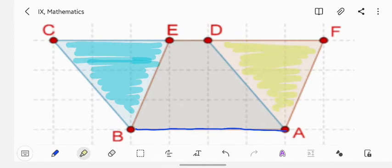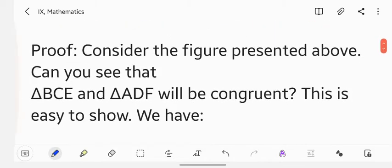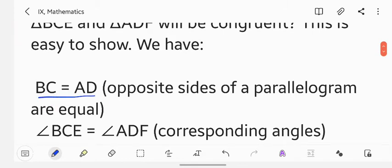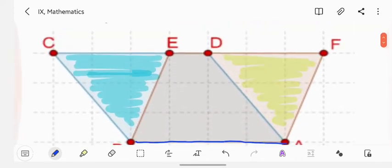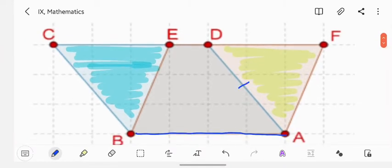These two triangles can be proved congruent by ASA congruence criterion. The proof requires three things. First, we'll see which angles are equal and which side is equal. By looking at this figure we have BC equals to AD. BC equals to AD because in a parallelogram the opposite sides are equal.